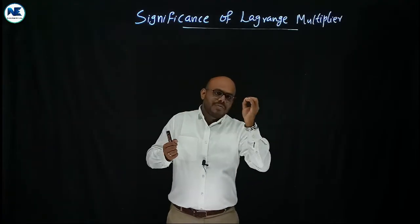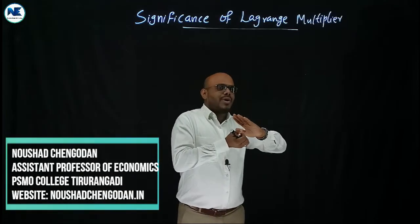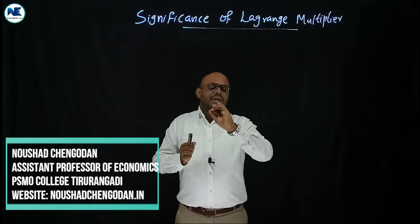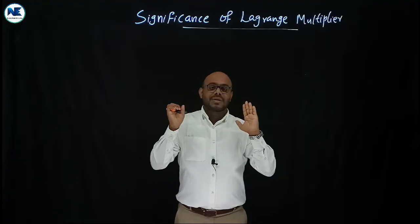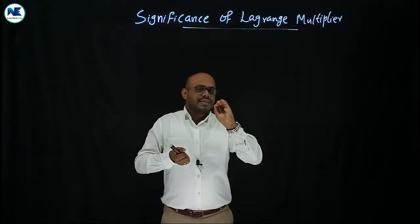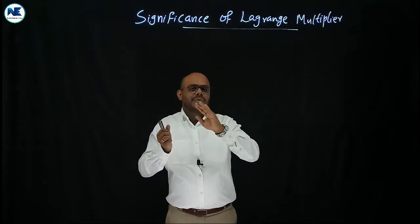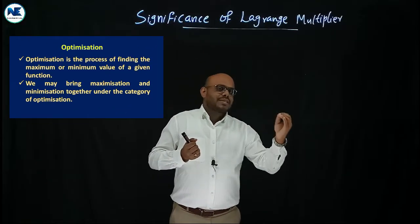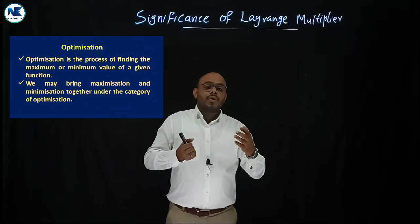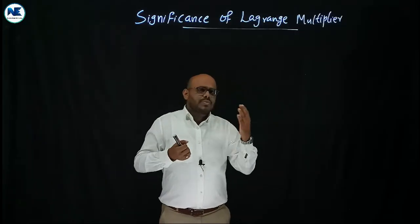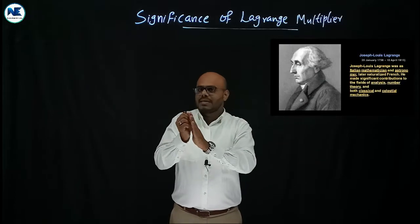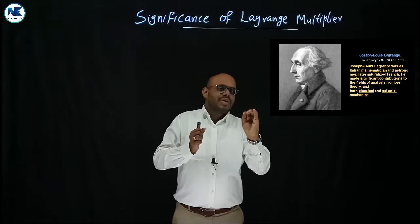It is a very simple topic and the key points are listed out for you. When you study this for the exam, you must give a five-mark answer. You must give an introduction — that is, the meaning of the Lagrange multiplier, which is a constrained optimization technique. Optimization means either maxima or minima — utility maximization, cost minimization, or profit maximization.